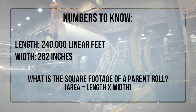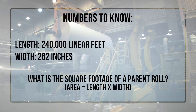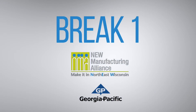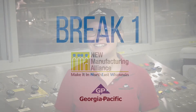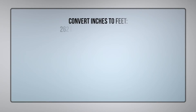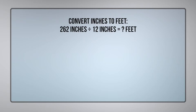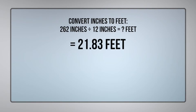How many square feet of paper are on each parent roll? To calculate the square footage, we need to multiply the width by the length of paper. First, we need to convert the width from inches into feet, so we divide 262 inches by 12 inches, which gives us 21.83 feet.